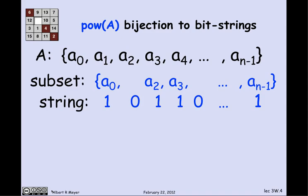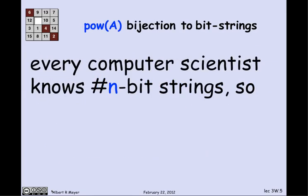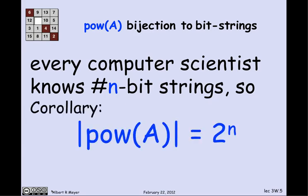So in short, the k-th bit in the string is 1 if and only if A_k is in the set. This clearly defines a bijection between subsets and strings: given a subset I can uniquely determine the string, and given the string I can uniquely determine the subset. So by the bijection theorem, the number of N-bit strings equals the size of the power set of A. Every computer scientist knows there are 2^N N-bit strings, therefore the power set of A has 2^N elements — the size of the power set of a finite set A is 2^|A|.